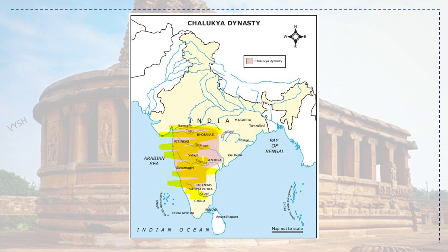This is the map of the Chalukyan dynasty, showing the extent of the Chalukyan empire. You can see Vatapi marked here. The right part covers Andhra and nearby the Cholas, while Kalinga — present-day Odisha — is also visible. The empire stretched from south of the Narmada to almost north of Kanyakumari.